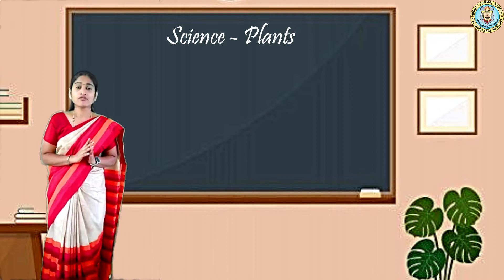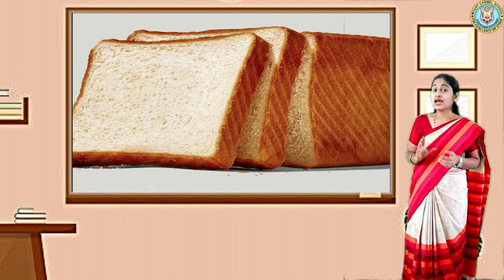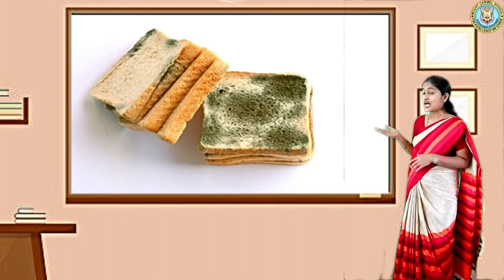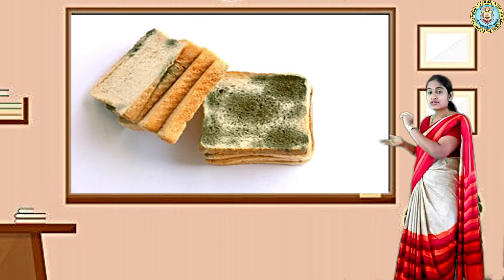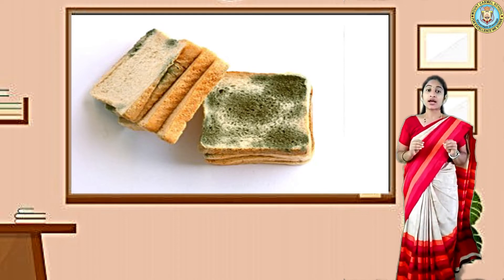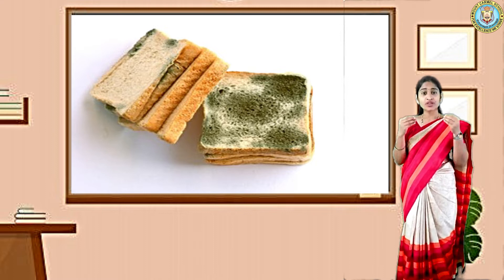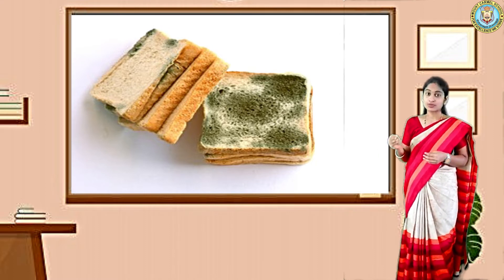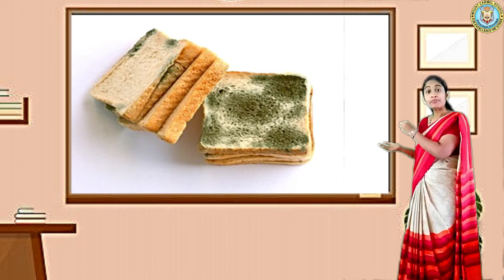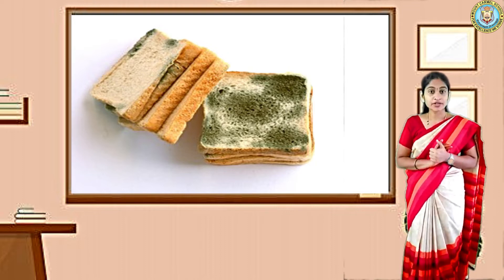Let us move on to non-green plants. For example, fungus. If you have bread in your house, take a piece of bread and keep that piece in a plastic bag for four to five days. Then what will happen? The fungus will grow on the bread. That fungus is nothing but a non-green plant. There is no green color here. This plant cannot prepare its own food. They live and grow on decayed and dead substances, getting nutrients and minerals from the bread itself. They are called non-green plants.